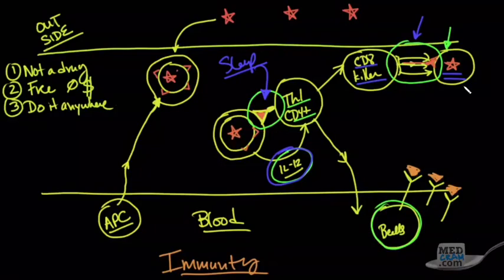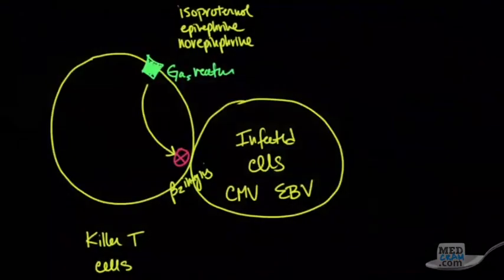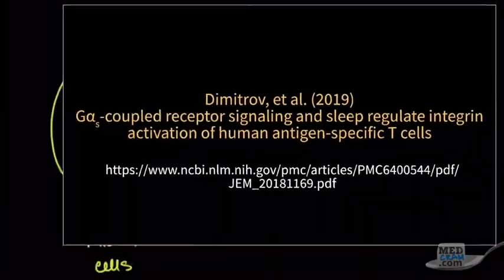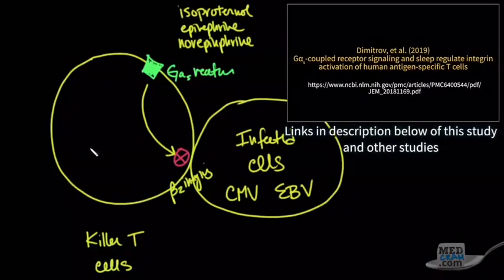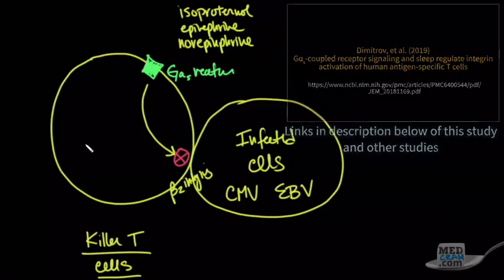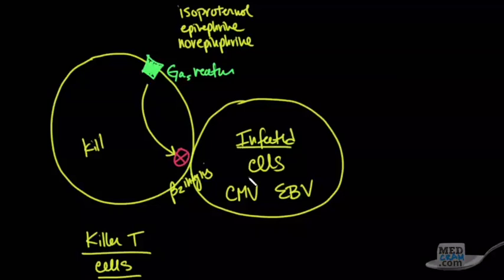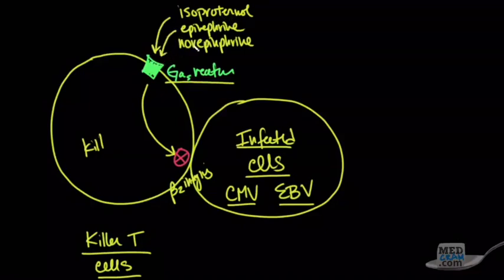We can see research and peer review discussed in this video. The CTL killer cell is a killer cell, and the virus is a type of cell target. The CMV virus and EBV virus involve T-cells with protein receptors. This receptor involves isoproterenol, epinephrine, or norepinephrine.